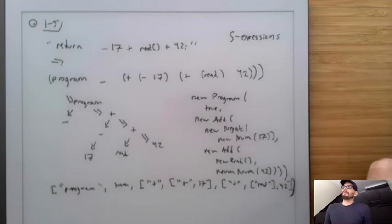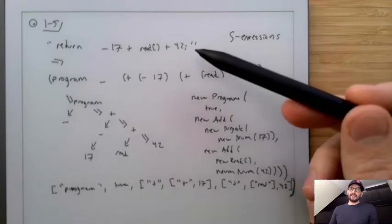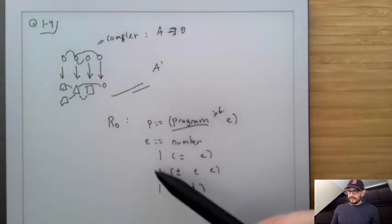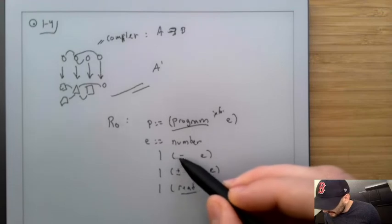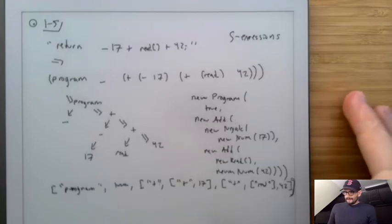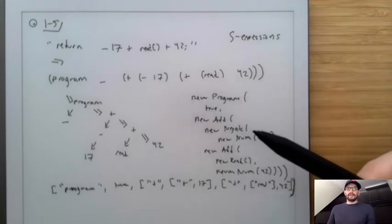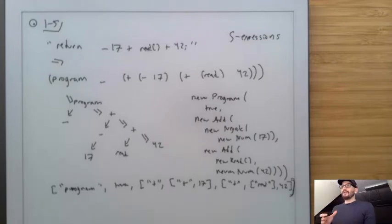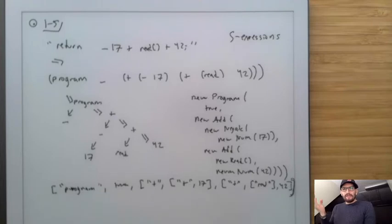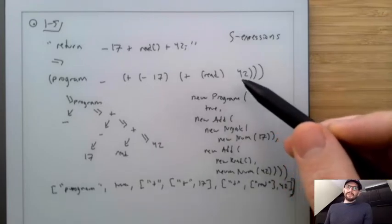R0 is our language with subtraction, addition, read, and program. Here's an example program — what's the meaning of it? It depends on what happens when you run read. If I give it zero, the answer would be 42 minus 17, which is 25. If I give it 3, the answer would be different. So we don't know the meaning of this program until after we run it. Going back to that diagram, the answers to this program are not numbers — they're functions that take input.